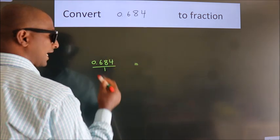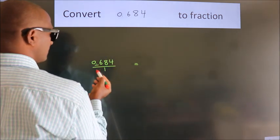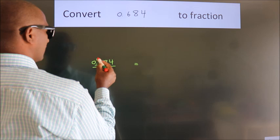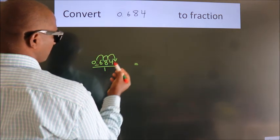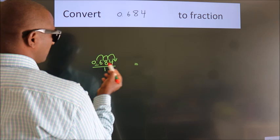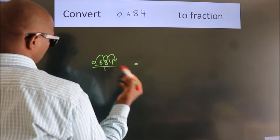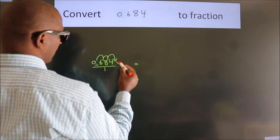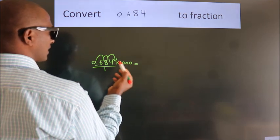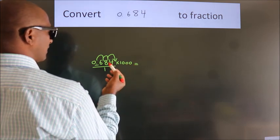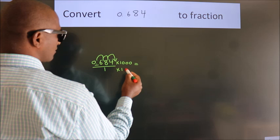we have to move this decimal after 1, 2, 3 numbers. To move this decimal after 3 numbers, we have to multiply it with 1000. Whatever number you are multiplying in the numerator, in the denominator also do the same.